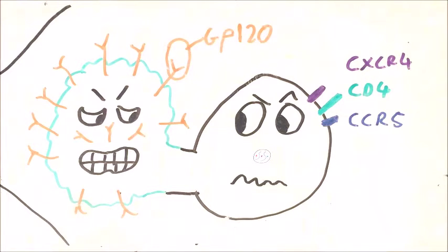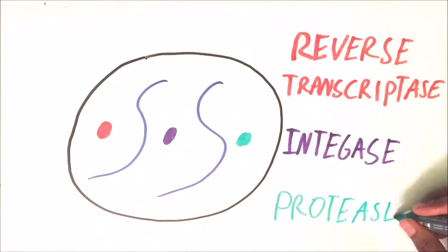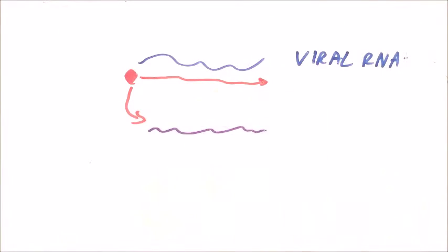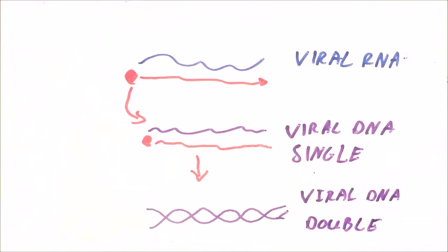The virus injects viral RNA and essential replication enzymes. There are three of these enzymes: reverse transcriptase, integrase, and protease. Once inside the T-cell, reverse transcriptase uses the viral RNA and some of the host's nucleotides to synthesize a single DNA strand. It then synthesizes a complementary strand of DNA using the newly formed single strand of DNA, ultimately leading to a double strand of DNA.